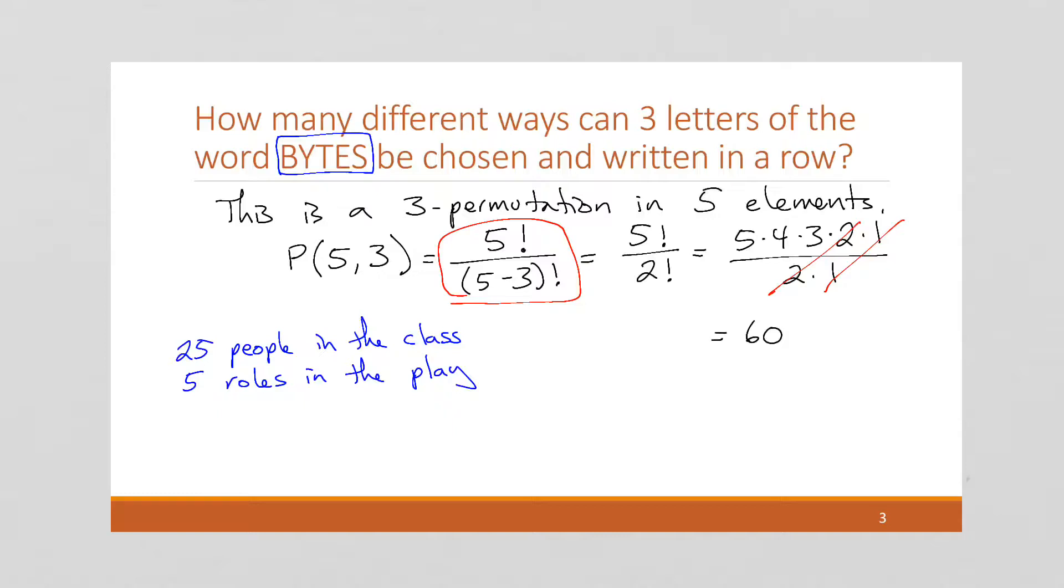Well, you might ask how many ways can that be done? Well, this is, of course, the r permutations of 25, 5, which is going to be 25 factorial, which is a very large number.